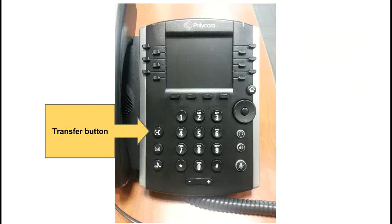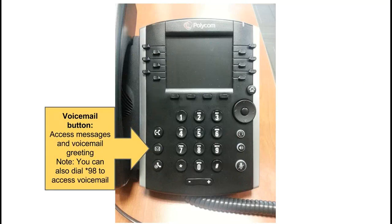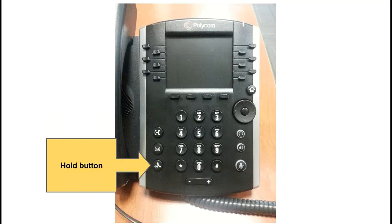Over here on our left we have our transfer button, which is symbolized by two handsets connected by an arrow. This is our voicemail button — you can access your messages and set your greetings by pressing this button, or you can dial star 98 to access the same information. The last physical button here is our hold button, shown by a phone handset with a little pause symbol.